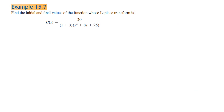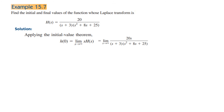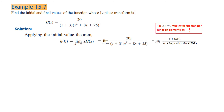Now let's see another example: find the initial and final values for the function whose Laplace transform H(s) is given. We apply the Initial Value Theorem: H(0) equals limit S tends to infinity of S·H(s). Multiplying by S gives 20S in the numerator with the denominator remaining the same.